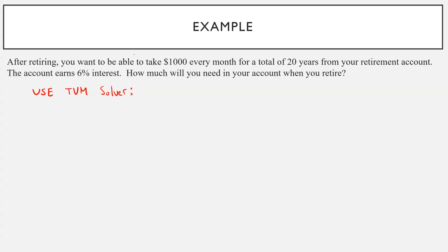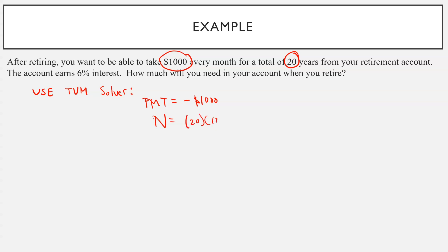After retiring, you want to be able to pay yourself $1,000 a month. This is what you're starting with, and the payment is negative because you're removing it from the account. For a total of 20 years, so for N we're going to do 20 years times 12 — you're going to withdraw from the account 240 times.